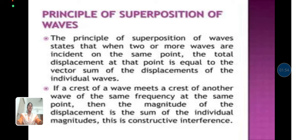The principle of superposition of waves states that when two or more waves are incident on the same point, the total displacement at that point is equal to the vector sum of the displacements of the individual waves. If a crest of a wave meets a crest of another wave of the same frequency at the same point, then the magnitude of the displacement is the sum of the individual magnitudes. This is constructive interference.